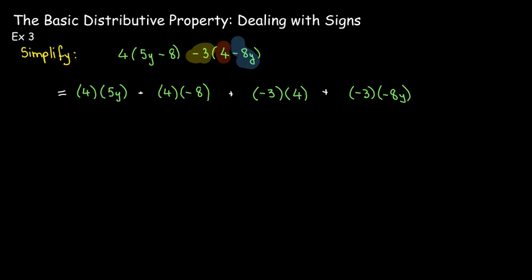I've put little plus signs in there to be formally correct, but when doing this in practice we won't be writing out all these products. A positive 4 times a positive 5y gives a positive 20y. A positive 4 times a negative 8 gives a negative 32. A negative 3 times a positive 4 gives a negative 12. And a negative 3 times a negative 8y gives a positive 24y.